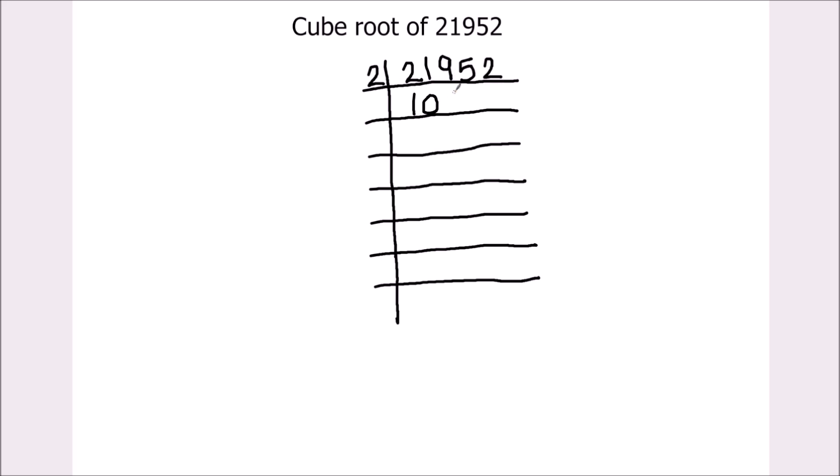So that's 19. 2 times 9 is 18 and 1 is remainder. This becomes 15. 2 times 7 is 14. 1 is remainder. This becomes 12. 2 times 6 is 12.